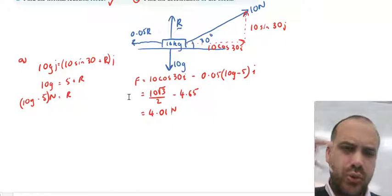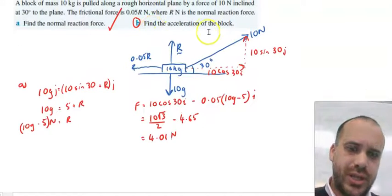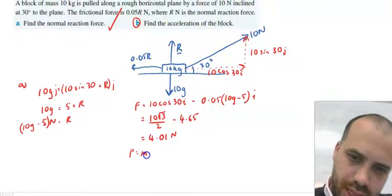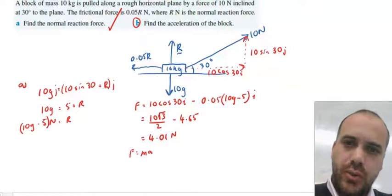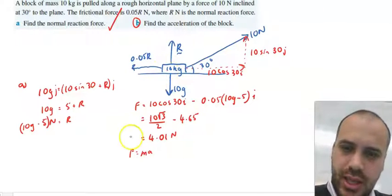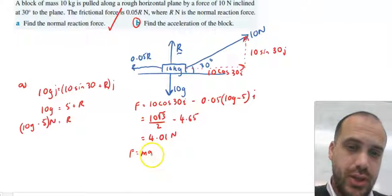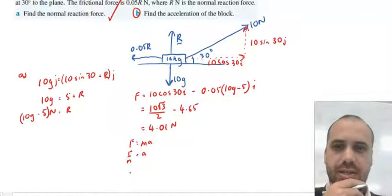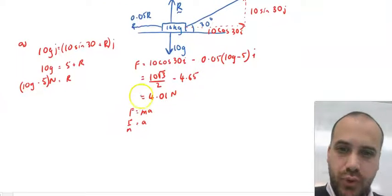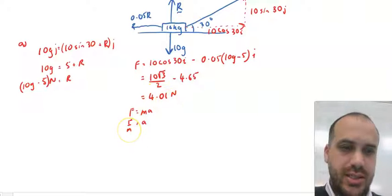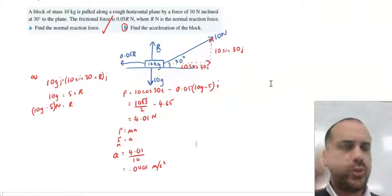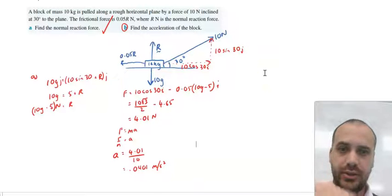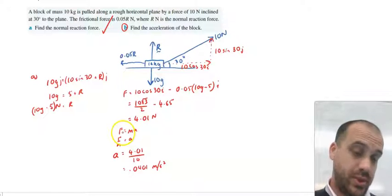Now, was I looking for force? No, I was looking for acceleration. So we know that force equals mass times acceleration. And what do we know? We know the mass and we know the force so we can find the acceleration, because acceleration will be equal to force over mass. And then we just put our force, 4.01, and our mass in there. All right, and there we have it. So all we're doing here is resolving forces and then applying our force equals mass times acceleration formula.